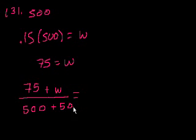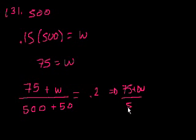So this now has to equal 20%. So we get 75 plus w over 550 is equal to 0.2.